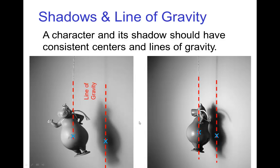The point here is that regardless of the camera angle or the shadow of the character, everything has to look consistent that gravity is pulling down on the object or the character, and that we have a consistent line of gravity.